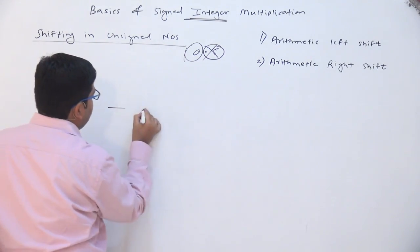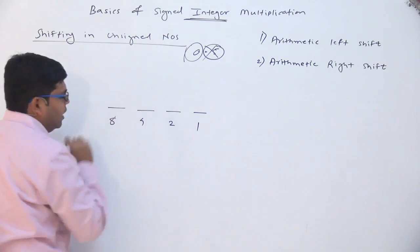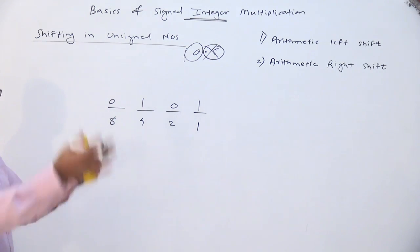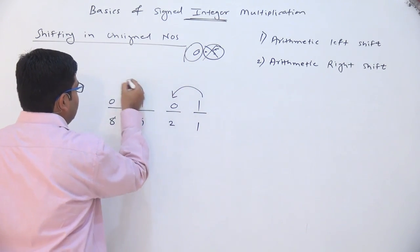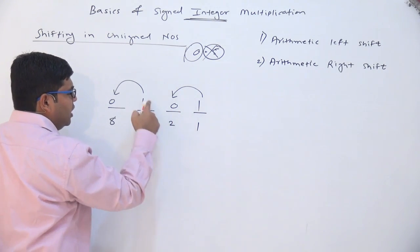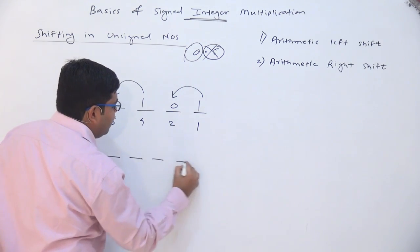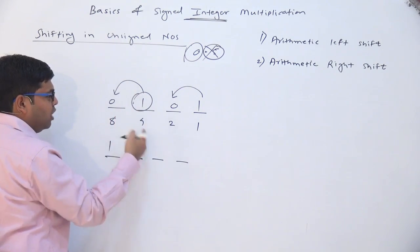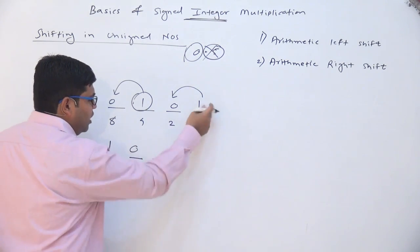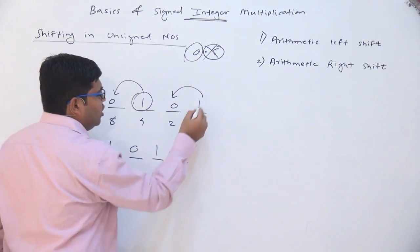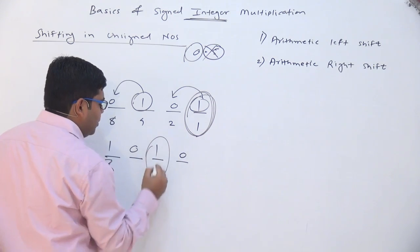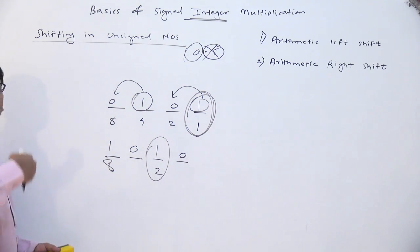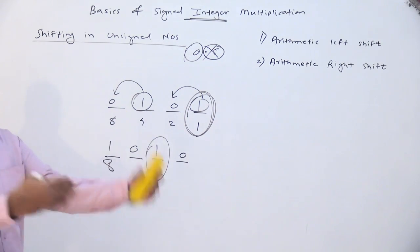Suppose we have a 4-bit number. The place values will be 1, 2, 4, and 8, and suppose the number is 1 0 1 0. When you left shift by 1, this 1 will come to this place and this 1 will come to this place. Initially the 1 represented 1 and this 1 represented 4. After left shifting, the 1 moves from the 4 place to the 8 place and so the value gets doubled. This 1 represented 4; after left shifting it represents 8. Everyone moves to the next higher place, and the value of the next higher place is twice that of the current place.